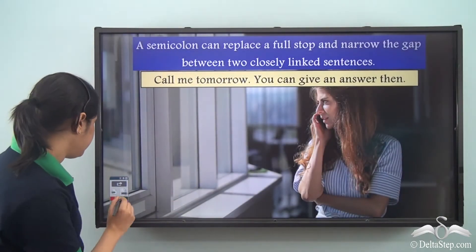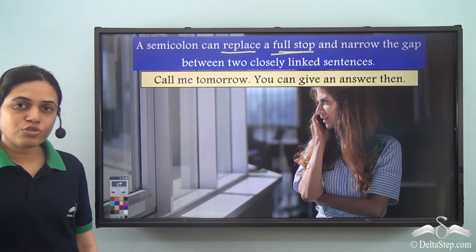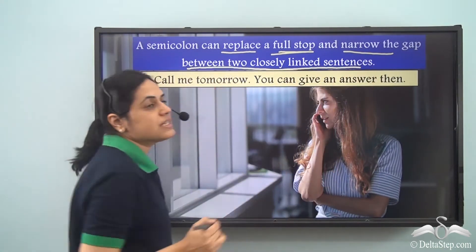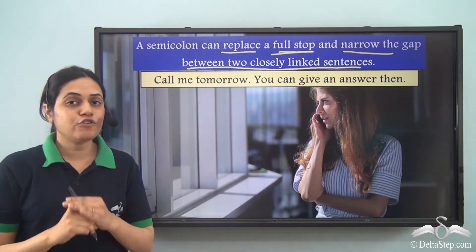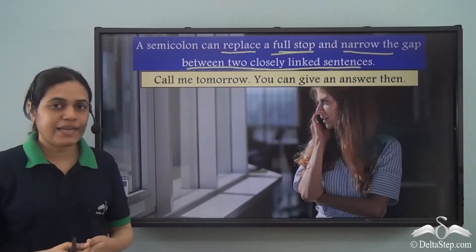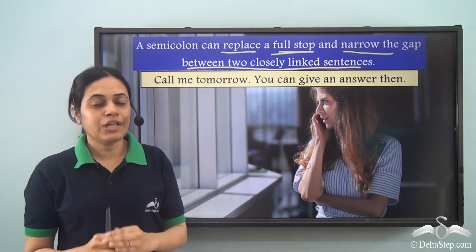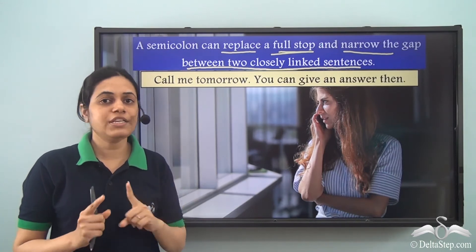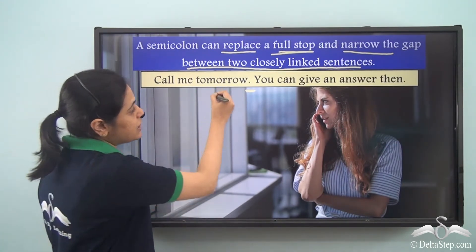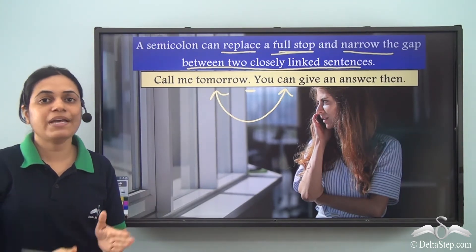A semicolon can replace a full stop. It is used to replace a full stop and narrow the gap between two closely linked sentences. We know that a full stop is used for a long pause. So whenever we have a full stop we give a long pause, like 'Call me tomorrow. You can give an answer.' There is a slightly long pause between these two sentences because of the full stop, but these two sentences are linked or closely related.